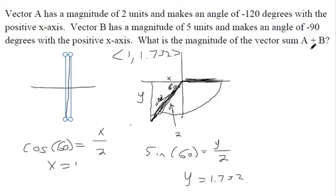Just got to do the same thing for vector B, and then we're going to add them together. Vector B has a magnitude of 5, an angle of negative 90. So negative 90, here's the positive x-axis. Negative 90 means we rotate counterclockwise. So this is our vector. It lands right on the y-axis and has a magnitude of 5.